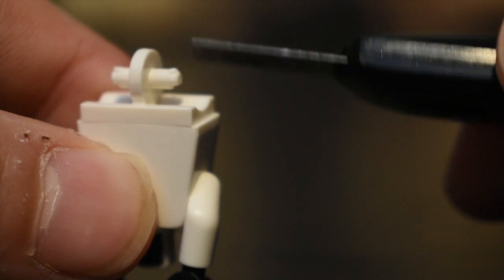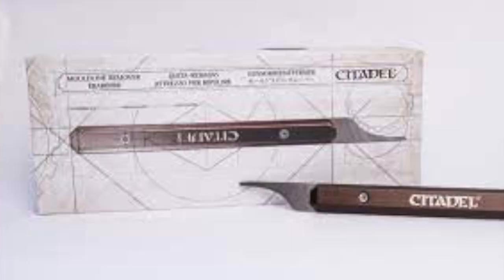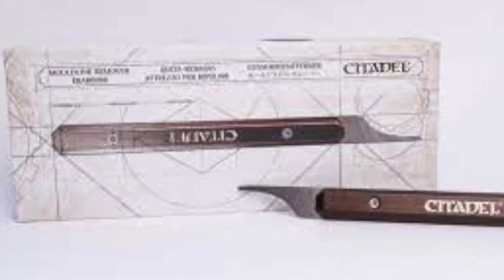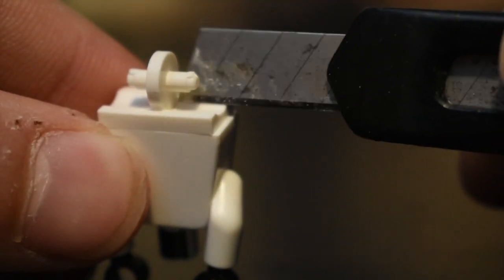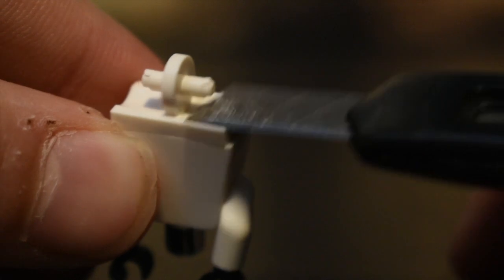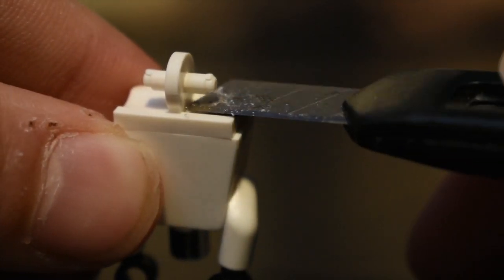But if you're using the citadel knife, you're not going to be using this knife right here. This is just your plain exacto knife. You're going to be using this knife up on screen. But if you're using the citadel knife, you're just going to have the knife and you're going to place it right there and then go in a semicircular motion just as I do.